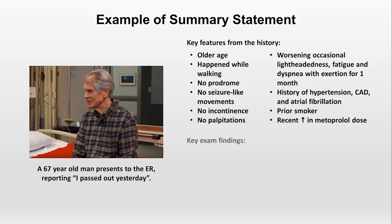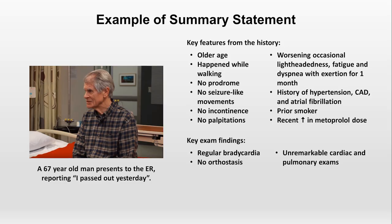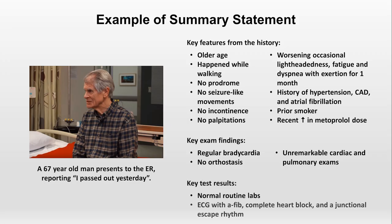Key physical exam findings include a regular bradycardia, no orthostatic hypotension, and an otherwise unremarkable cardiac and pulmonary exam. Key test results include normal routine labs, and an ECG with AFib, complete heart block, and a junctional escape rhythm. Well, that's a lot of information.